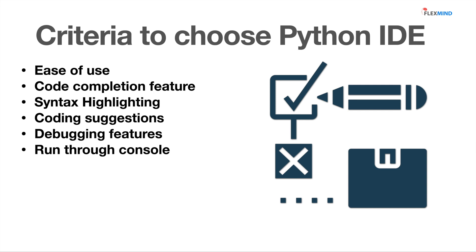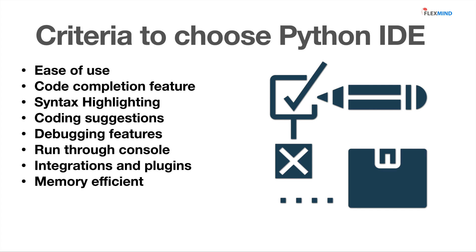The IDE should have a feature to run code through a console that is built inside the IDE itself. It should also support different integrations and plugins — for example, Git control, security-related plugins to check if your code is secure, and to detect if you are revealing any secrets before pushing code to Git. Those integration plugins should be easy to use and available in the IDE.